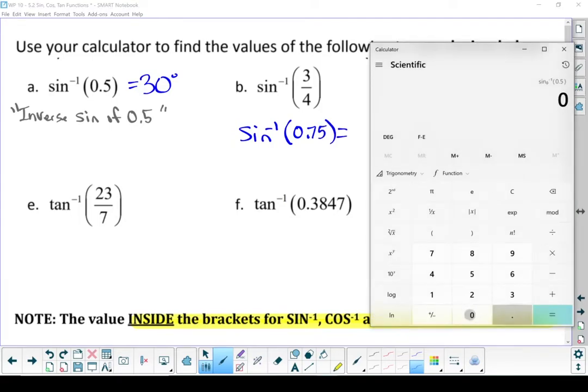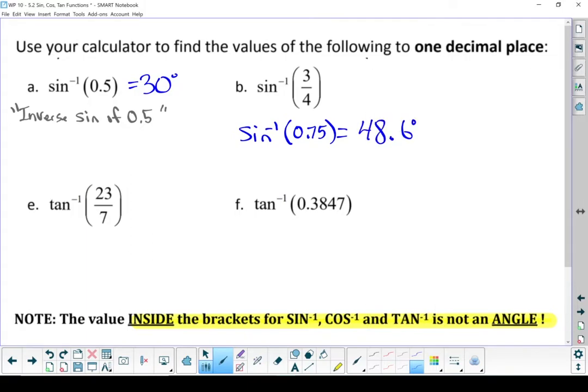Bring up my calculator. 0.75. Going to trig. I want the second function sine. 48.6. Round it off. That's an angle, so I'm going to put a little degree symbol on there.